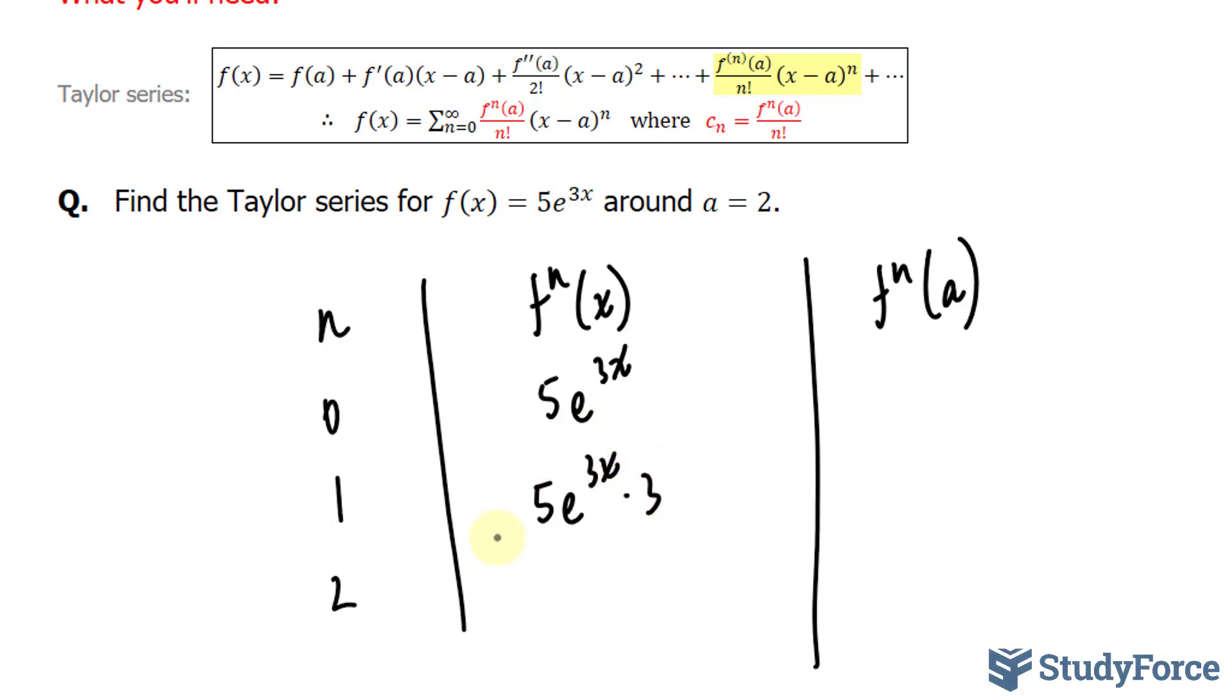Now we'll take the second derivative, where we get 5e^(3x) times 3 times 3. And as you can tell, the more you take the derivative, you'll end up with this similar pattern where 3s are being multiplied.